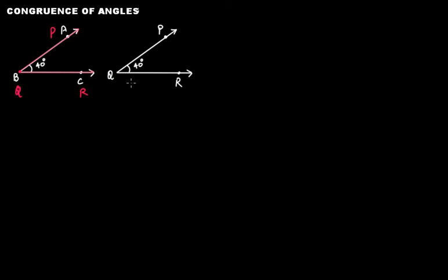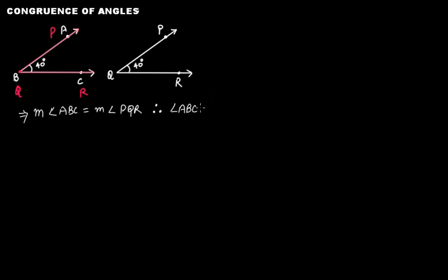Applying the superposition method — if you superpose angle PQR over angle ABC — then angle ABC will be completely covered by angle PQR, because the angles are the same. Therefore, the measure of angle ABC is equal to the measure of angle PQR, and therefore angle ABC is congruent to angle PQR. This is the congruence of two angles.